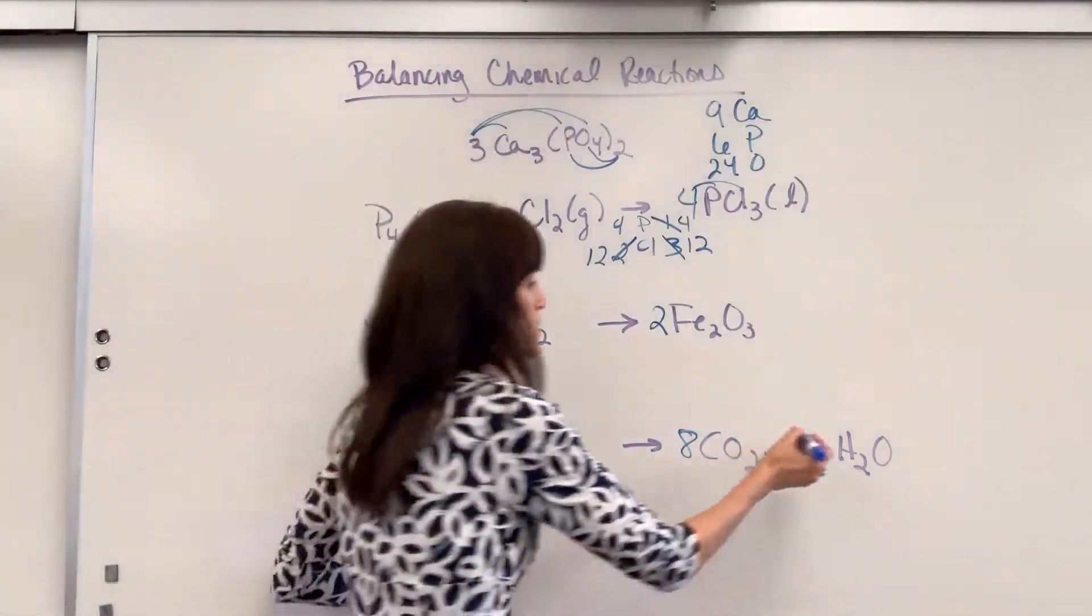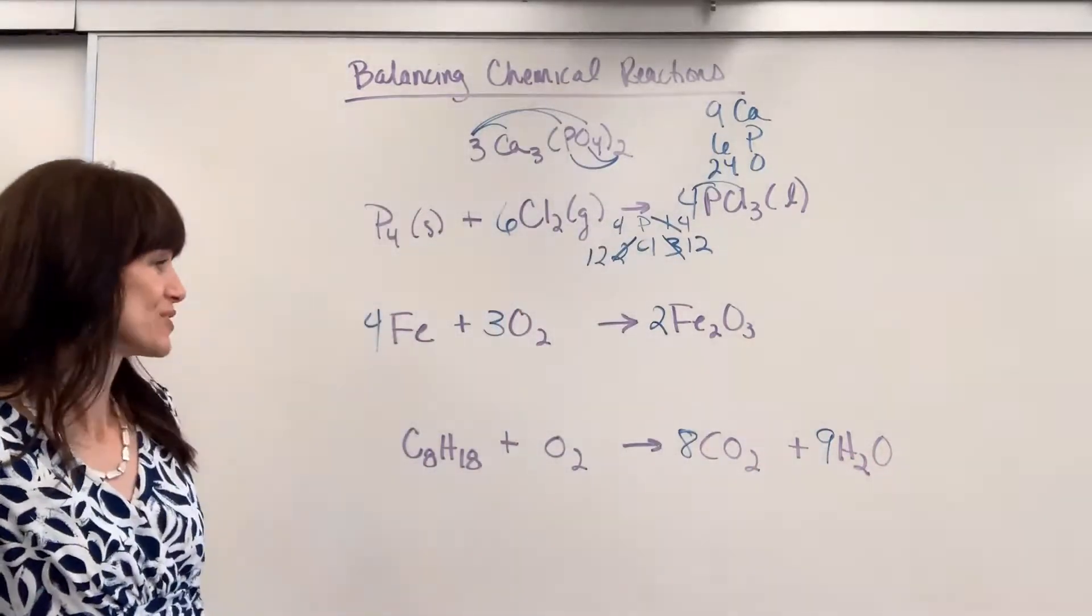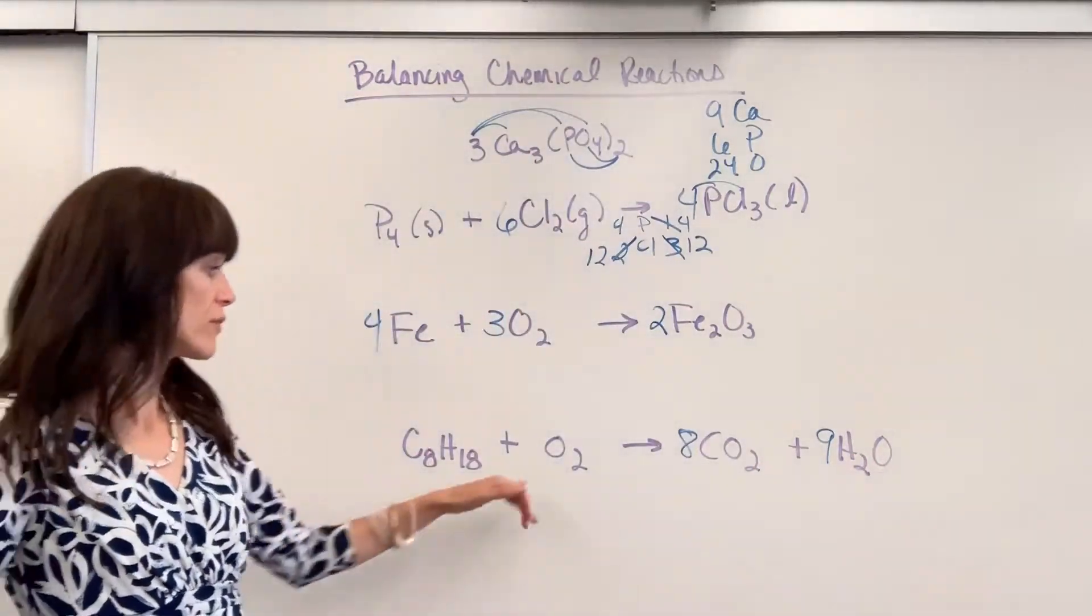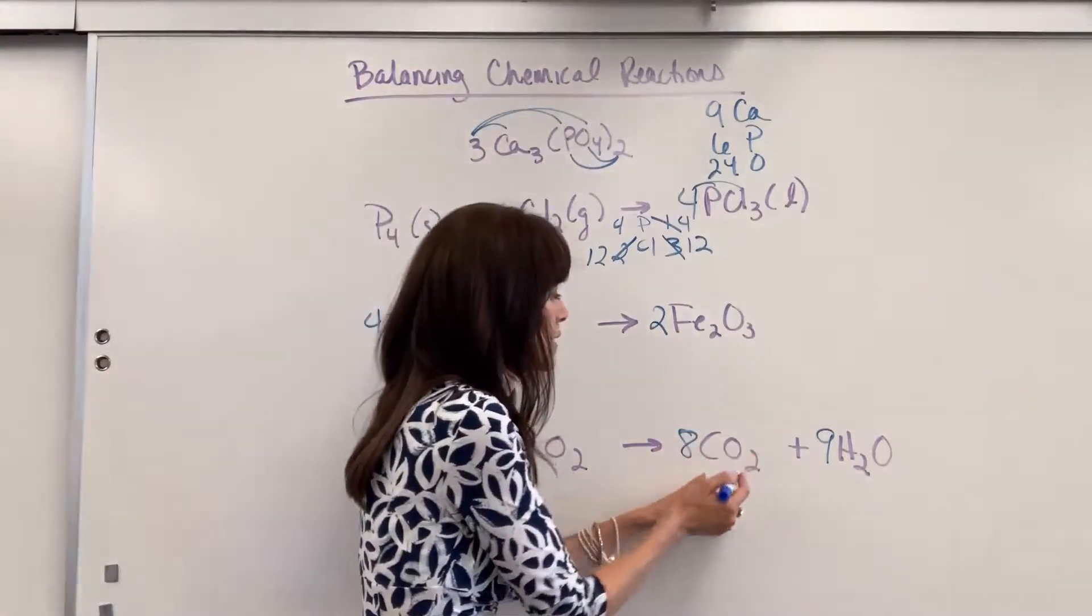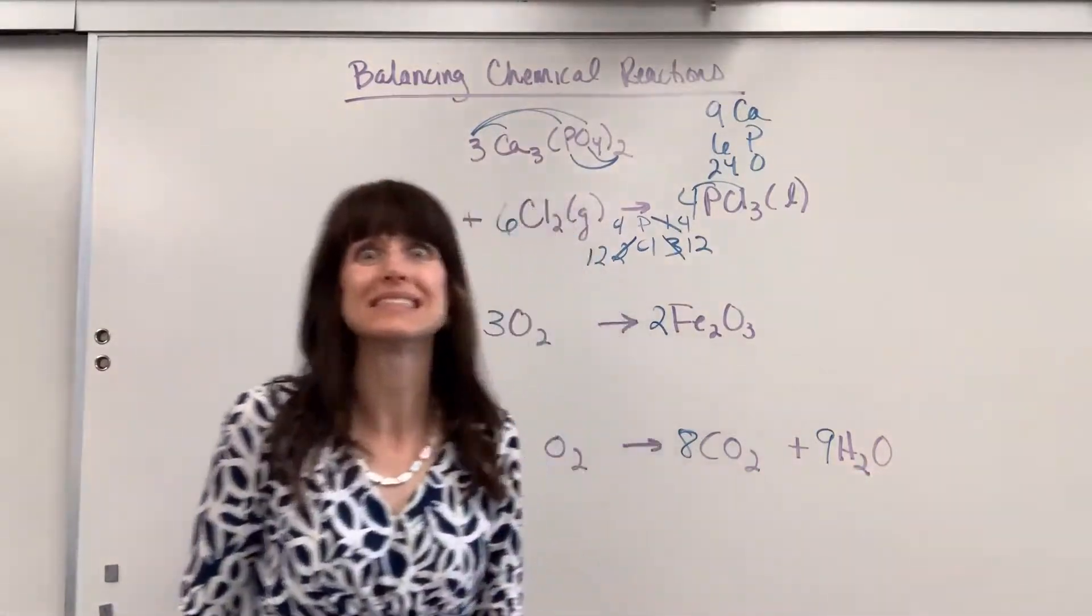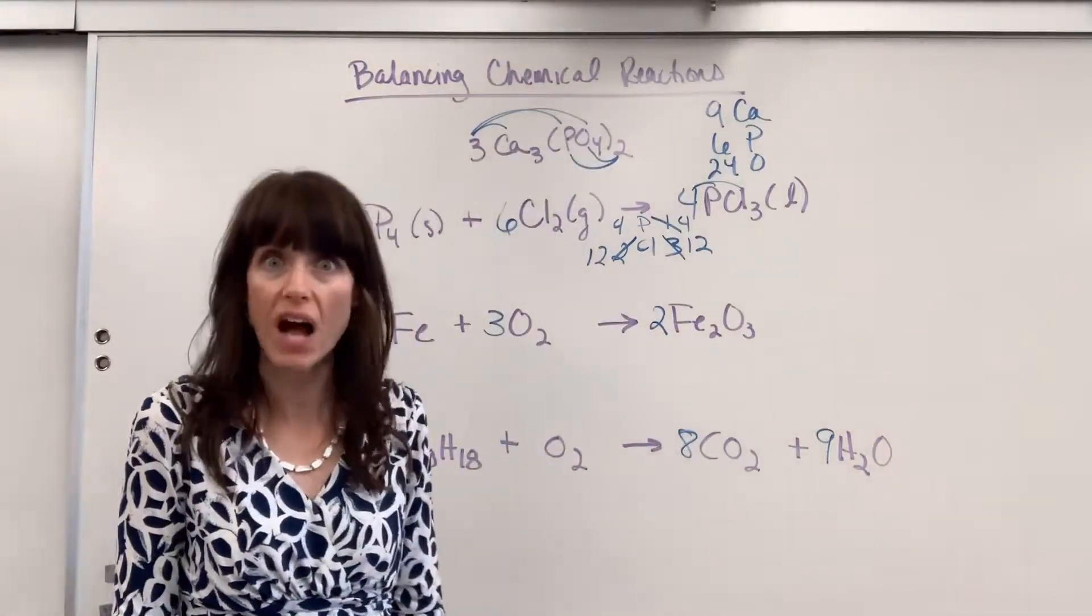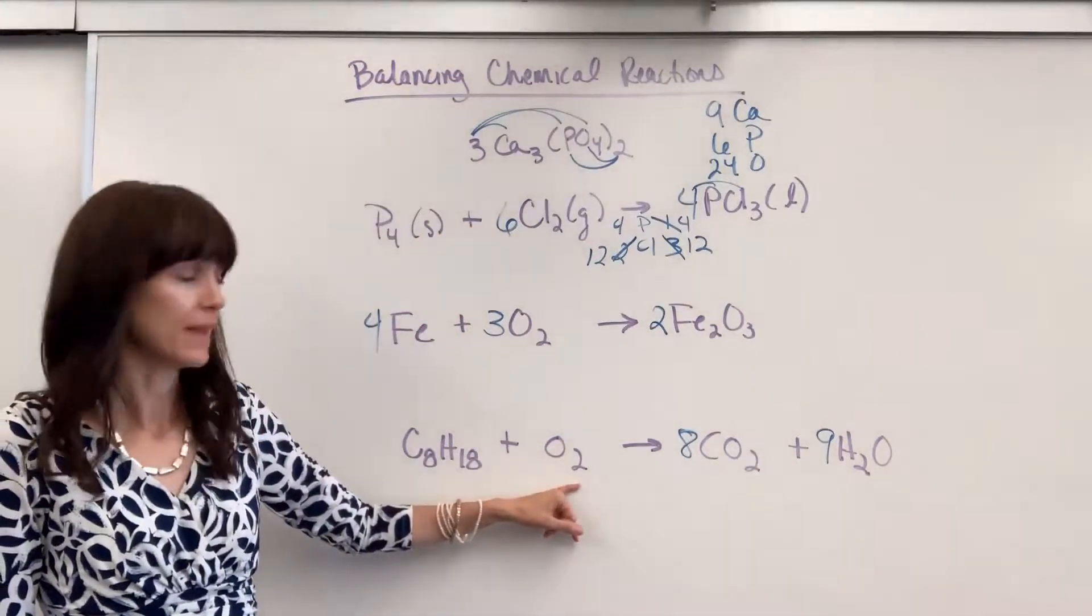Next we'll do hydrogen. I've got 18 hydrogen. So let's put a nine right here. Nine times two gives me 18 hydrogen. Now let's check out our oxygen. I've only got two right here. Over here 16 times, excuse me, eight times two is 16. And then nine times one is nine. Nine plus 16 is 25. 25, but that's an even number.